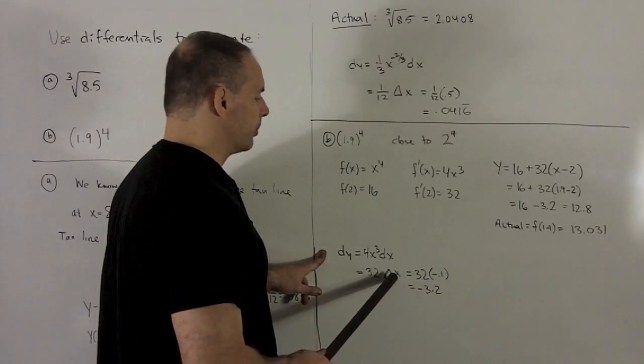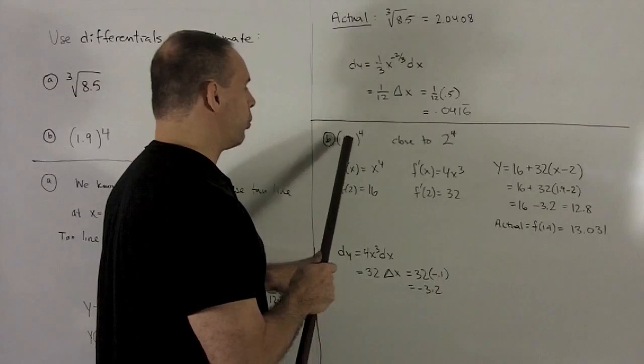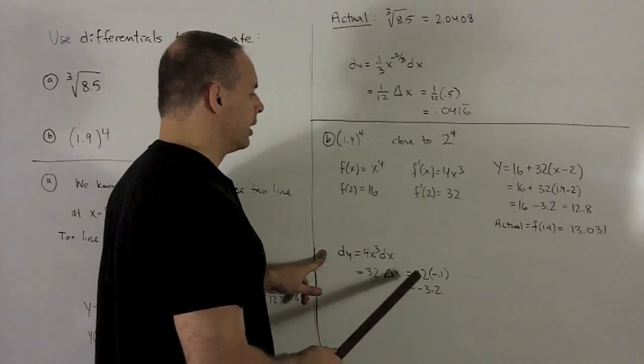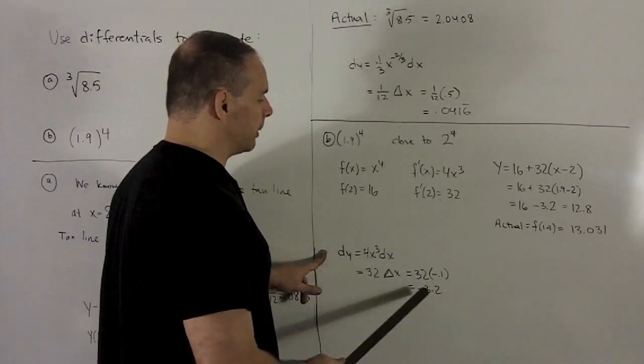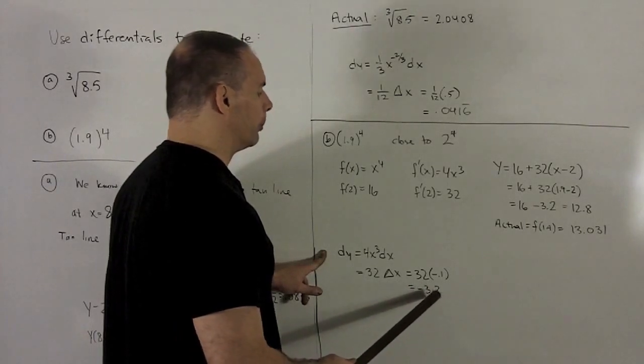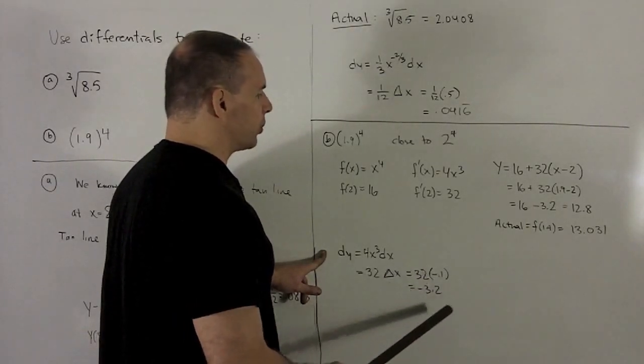And note here, delta x is going to pick up a minus sign, because we're going to have 1.9 minus 2. And so our differential is going to be minus 3.2.